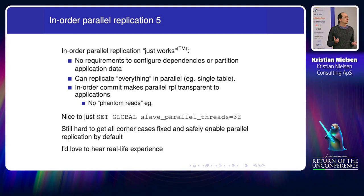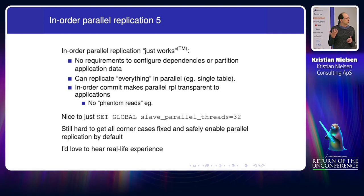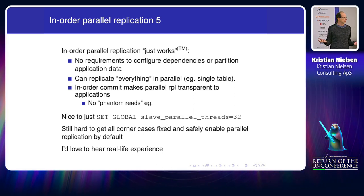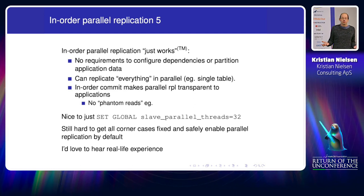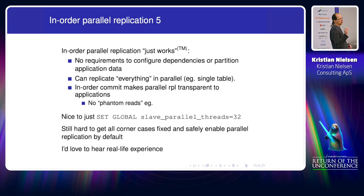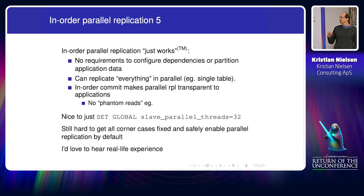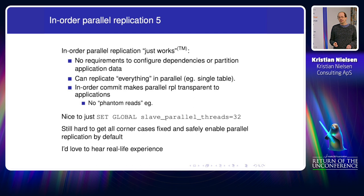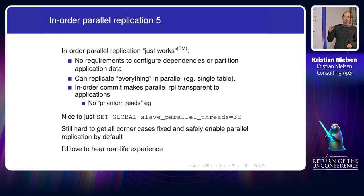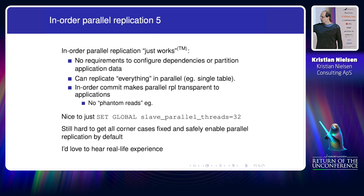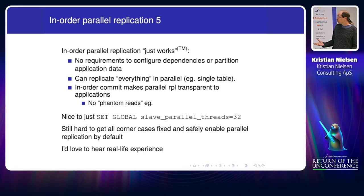I think this in-order parallel application is a very powerful feature. The good thing is that it just works. I was doing a benchmark and it was a little bit slow, so I just increased the parallel application — I didn't have to think about whether it works in this case, or whether I need to partition my data. It just worked and was faster. I think that's a very good property. This is the key to having parallel application enabled by default, because it will be transparent to applications. The reason we can consider this is because it matches the fundamental action of replication.